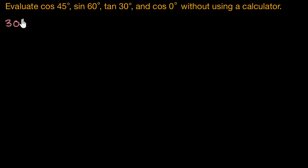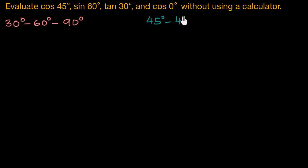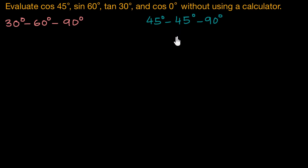The first triangle we should think about is a 30-60-90 degree right triangle, and the other triangle is a 45-45-90 degree triangle. What is so special about these triangles? These triangles show up a lot in geometry and trigonometry, and we know the ratio of the sides of these triangles.